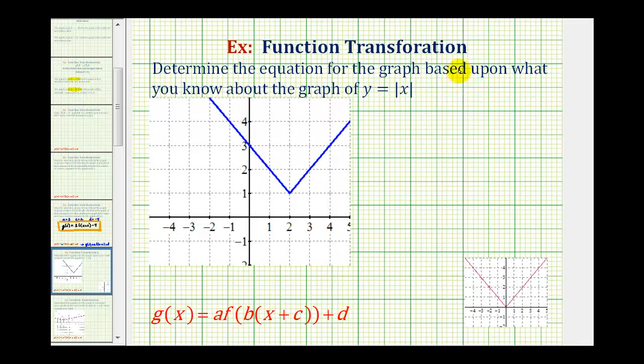We want to determine the equation for the graph based upon what we know about the graph of y equals the absolute value of x, or of course, if we want, we can write this as f of x equals the absolute value of x. This problem assumes that we know the graph of the absolute value function looks like the graph provided here in red.